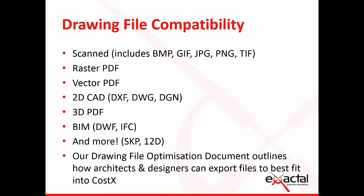In terms of drawing file compatibility, scanned images include BMP (bitmap images), GIF (graphics interchange format), JPEG (joint photographic expert group), PNG (portable network graphics), and TIF files (tagged image format). Raster files are 2D images that are basically scanned or pixelated. So a Raster PDF won't be able to be used in line mode.